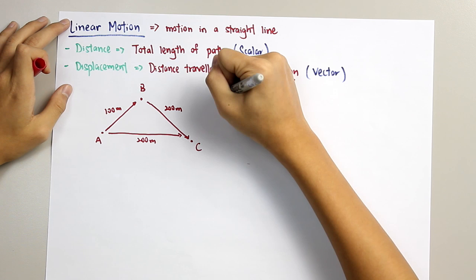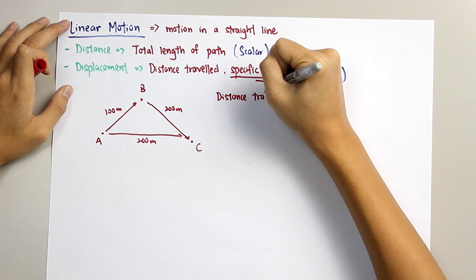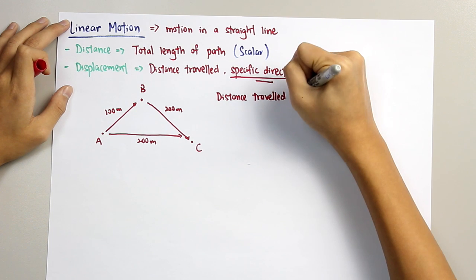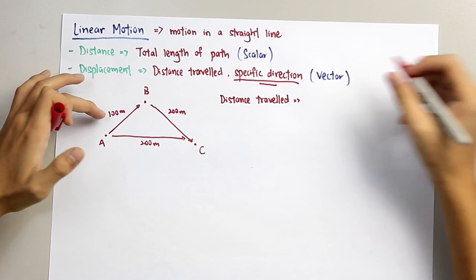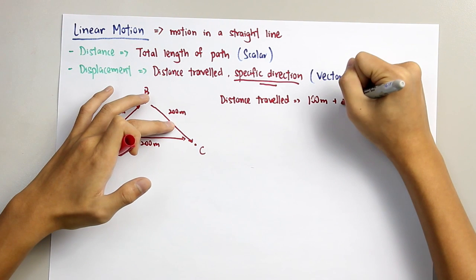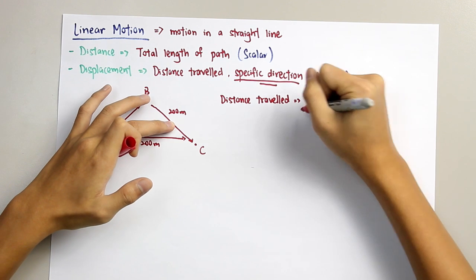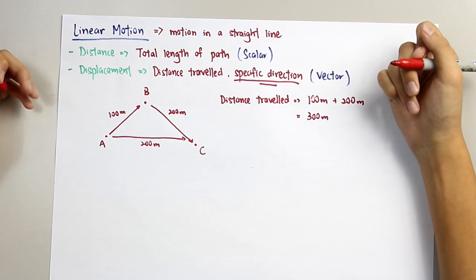And so, the distance traveled by the driver is 100 meters plus 200 meters equals to 300 meters.